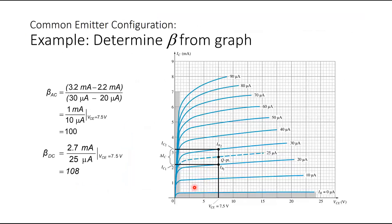Another example: if you are given the graph but not the value of beta, you can calculate it. For β_AC, compute ΔIC / ΔIB at a fixed VCE — for example at VCE of 7.5 volts, β_AC is around 100. For β_DC you may get about 108. They are approximately the same and the difference does not have significant effect.